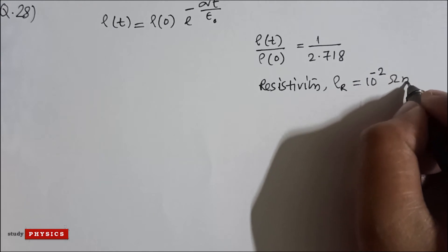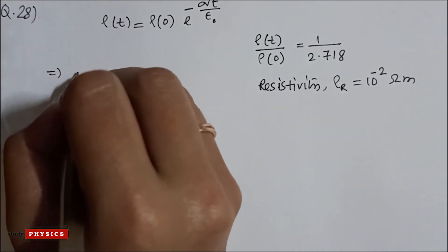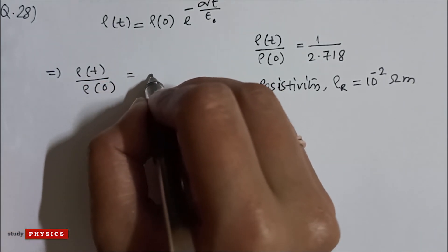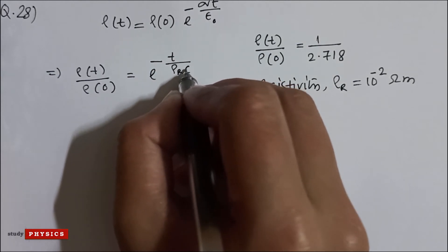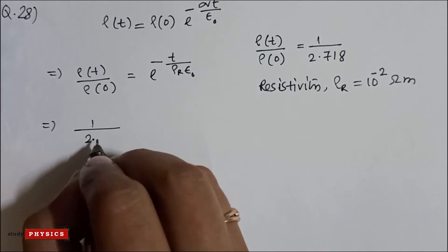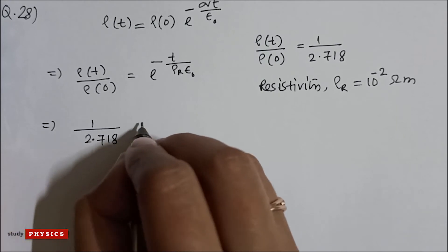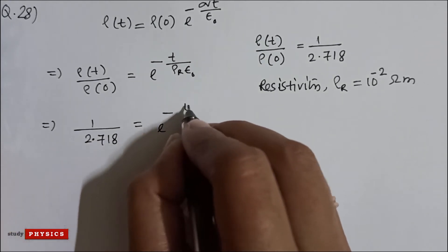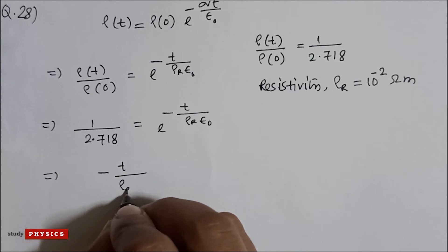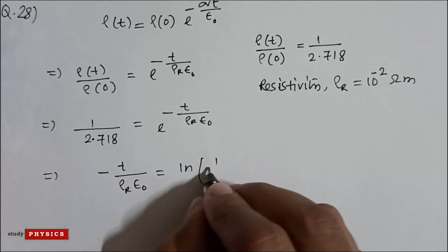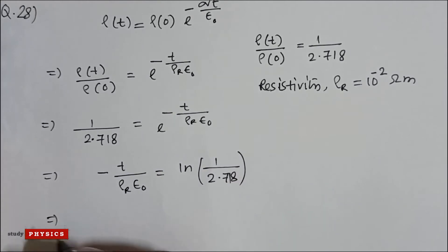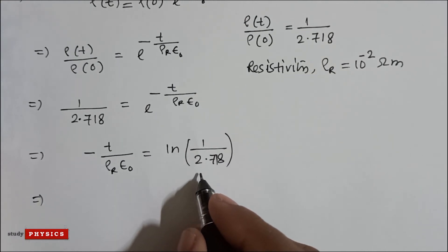So from this, ρ(t) divided by ρ₀ is e to the power minus t divided by ρᵣε₀, which equals 1 divided by 2.718. This gives e to the power minus t divided by ρᵣε₀ equal to 1 divided by 2.718, and from this t divided by ρᵣε₀ equals ln of 1 divided by 2.718, and this value is almost minus 1.